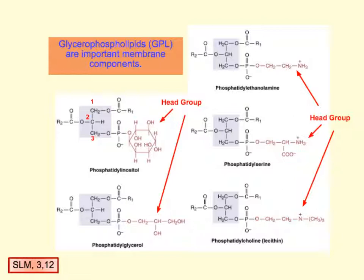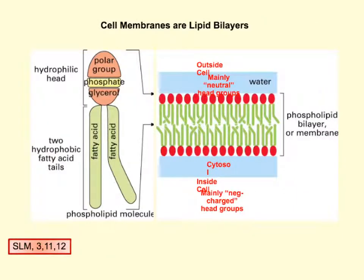Now we have glycerol phospholipids. Looking back at this, on carbon number 1 we still have R representing our fatty acid carbon chain, so we still have a fatty acid on carbon 1 and carbon 2. But carbon 3 gets replaced with a phosphate group. There are several different phosphate moieties, but their main purpose is to make a head group that is polar, paired with the non-polar carbon chain — so this becomes amphipathic. Amphipathic phospholipids are really important especially for membrane structure.